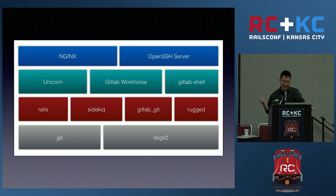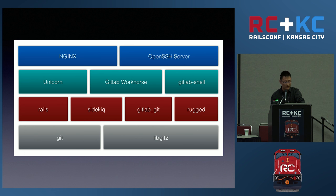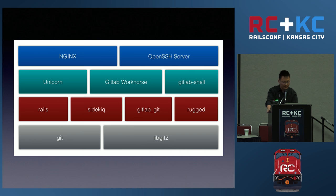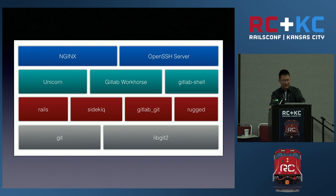For SSH requests, they go to GitLab Shell. On the third level, Rails handles operations on page, and GitLab Git is a wrapper around Rugged, which is a wrapper around libgit2. Sidekiq handles task processing. On the lowest level, it uses both Git and libgit2. libgit2 is a rewrite of Git that is portable and embeddable — it works as a library. They see it as the second generation of Git, hence the name, with 'lib' as a prefix because it's a library.